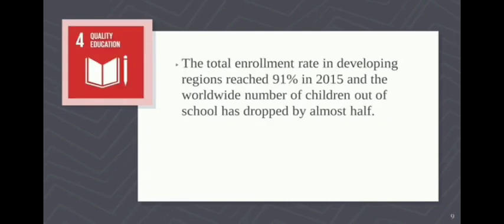SDG 4 is Quality Education. The total enrollment rate in developing regions reached 91% in 2015, and the worldwide number of children out of school has dropped by almost half. Achieving inclusive and quality education for all reinforces the belief that education is one of the most powerful vehicles for sustainable development. The goal also aims to provide equal access to affordable vocational training and universal access to quality higher education.